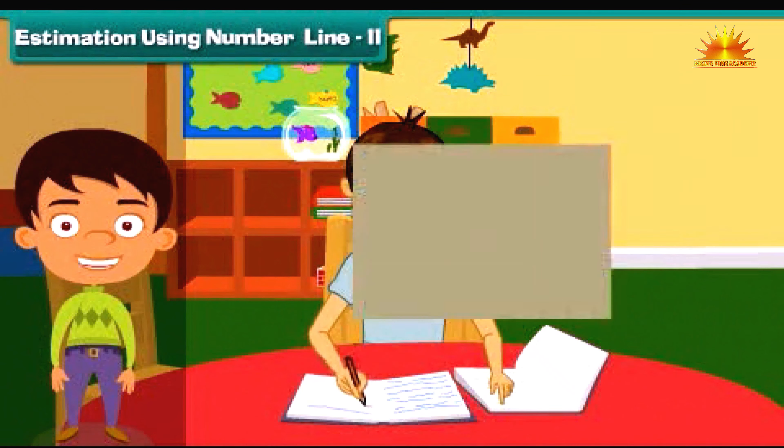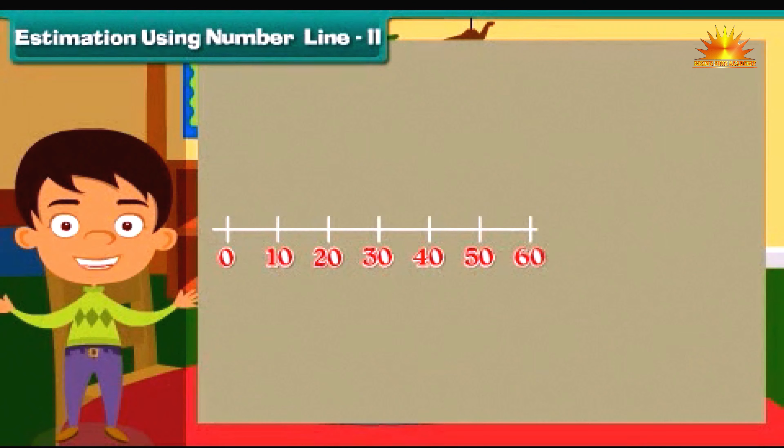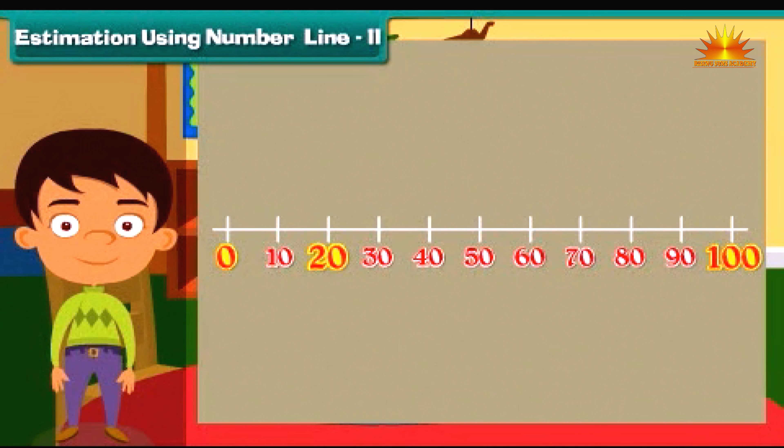Let us now consider a bigger number line from zero to 100. Can you guess the position of number twenty on this line? It will be near zero or towards 100. Yes, it will be near zero.